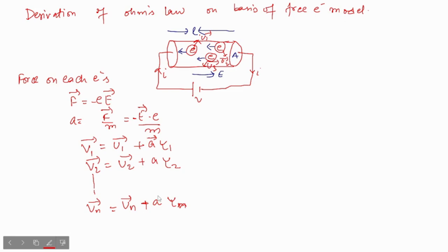What will be the average velocity of the free electrons? Drift velocity Vd equals V1 plus V2 plus V3 up to Vn upon n, where n is the number of free electrons. This is your drift velocity, the average velocity.